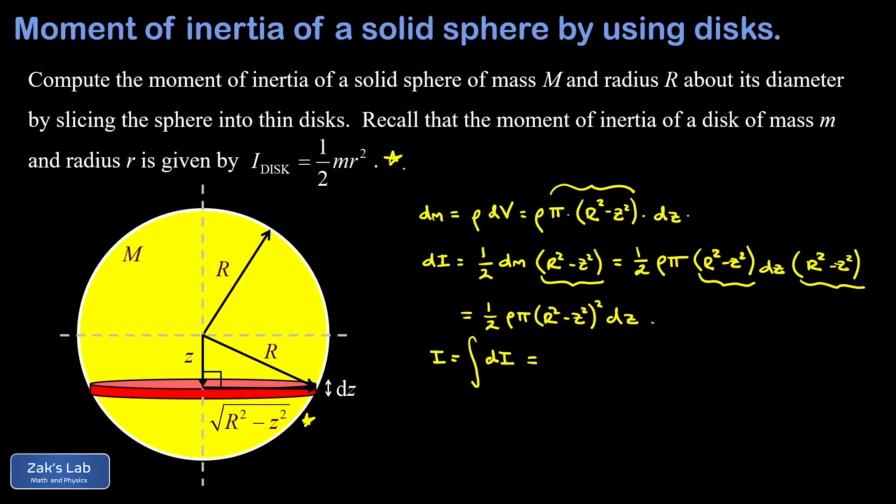All we have to do is plug in our formula for dI and then choose some limits of integration. When I plug in dI I'll go ahead and move constants out to the front. I have one half rho times pi and then we have the integral of r squared minus z squared all squared dz.